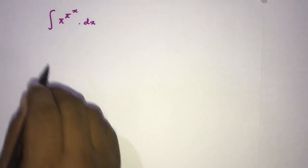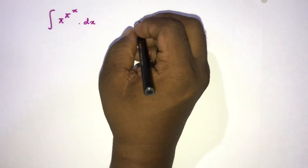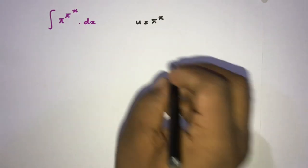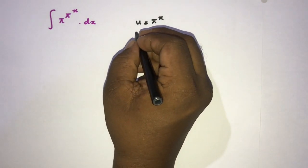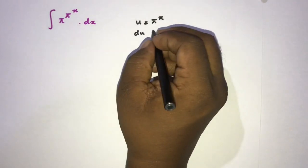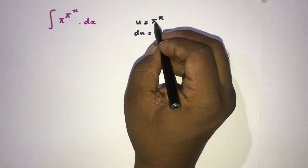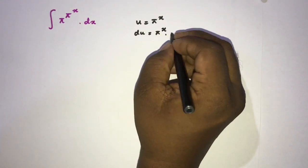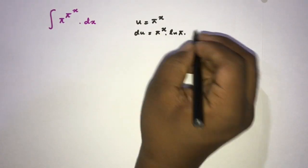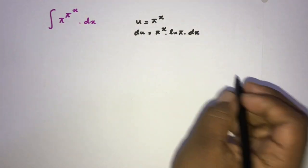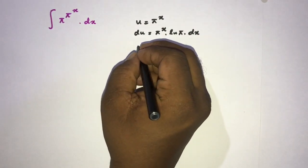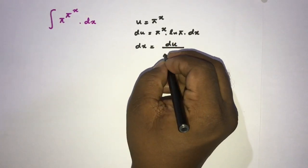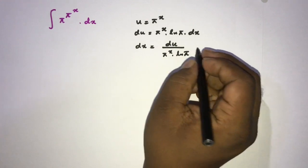Let's start with substitution. We take u equal to π raised to the x. Now differentiate: du is equal to π raised to the x times the natural log of π times dx. We can isolate dx, so dx is equal to du over π raised to the x times natural log of π.